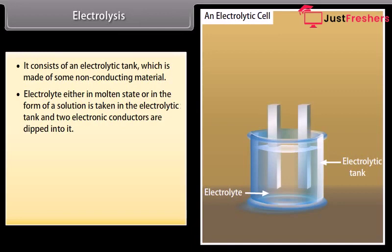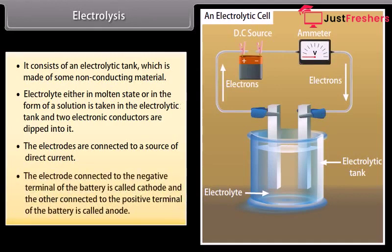And two electronic conductors are dipped into it. The electrodes are connected to a source of direct current. The electrode connected to the negative terminal of the battery is called cathode, and the other connected to the positive terminal of the battery is called anode.